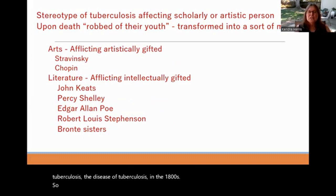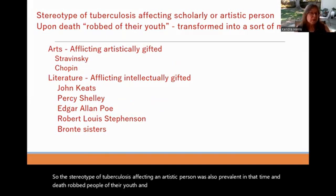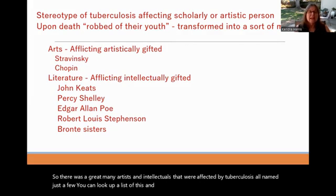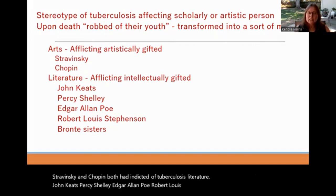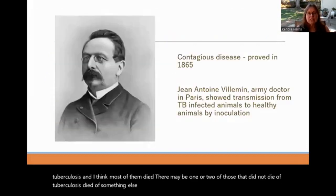The stereotype of tuberculosis affecting artistic people was also prevalent at the time — death robbed people of their youth and transformed them into martyrs. Many artists and intellectuals were affected. Among composers, Stravinsky and Chopin both had and died of tuberculosis. In literature, John Keats, Percy Shelley, Edgar Allan Poe, Robert Louis Stevenson, and the Brontë sisters all had tuberculosis — most of them died from it.